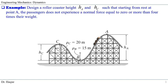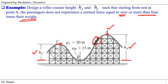The problem says: design a roller coaster height HA — from the peak to the base — and height HC from the second peak to the base, such that starting from rest at point A, the passengers do not experience a normal force equal to zero or more than four times their weight W. So the limits are zero and 4W.